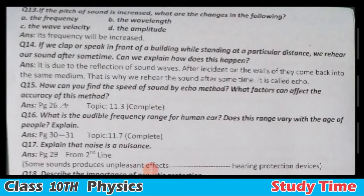Question number fifteen: How can you find the speed of sound by the echo method, and what factors affect the accuracy of this method? This is a detailed question. Refer to the lecture on echo of sound — topic 11.3, page number 26. Listen to the lecture to understand and explain it easily.